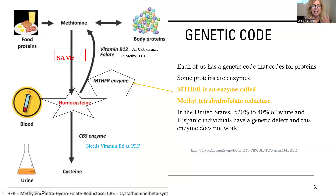The first thing is that we have what is known as a genetic code, and the genetic code is the thing that codes for proteins. When we eat food, one of the amino acids that we need is methionine. Methionine can be part of body proteins, but also methionine does a methyl donation reaction — when it gives its methyl group away, it becomes homocysteine. And there's an MTHFR enzyme that's going to help move things back over to methionine.